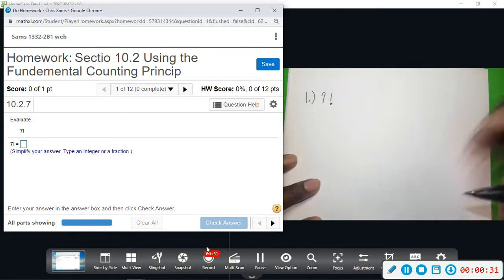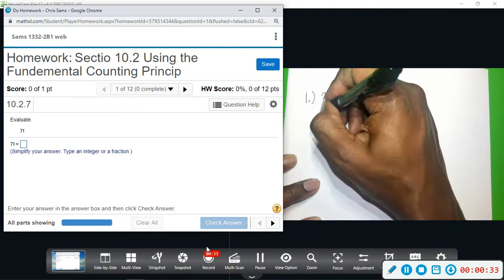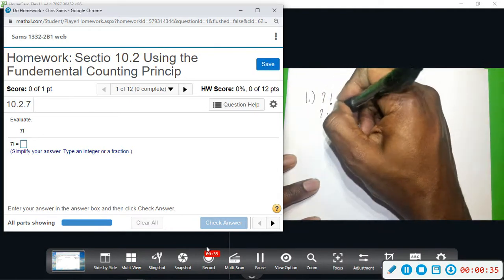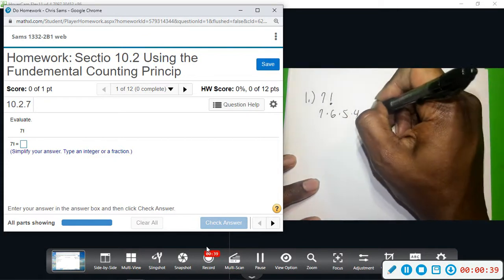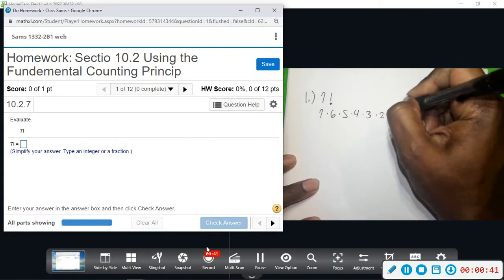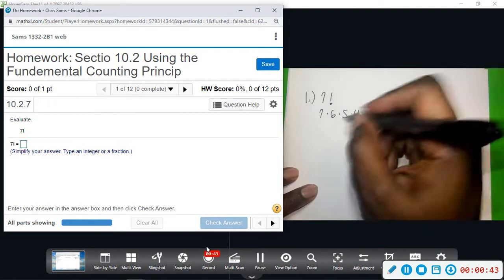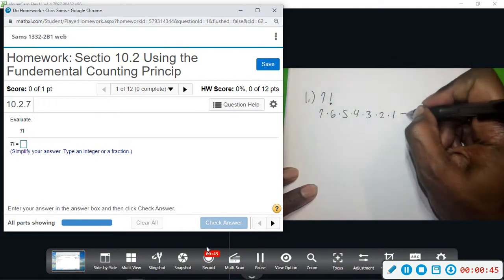all the way down to one. So that means we're going to do 7 times 6 times 5 times 4 times 3 times 2 times 1. We're going to multiply these all together and that will give us a final answer.